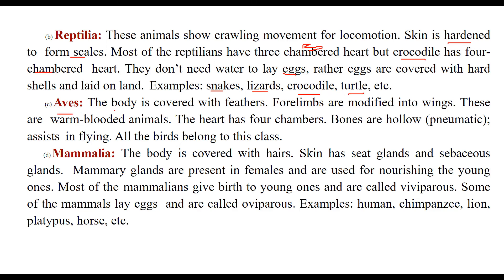Then comes Aves. The body is covered with feathers. They have four limbs, but the forelimbs are modified into wings. These are warm-blooded animals. The heart has four chambers. Bones are hollow — called pneumatic bones — which assist in flying. All birds belong to this class, Aves.